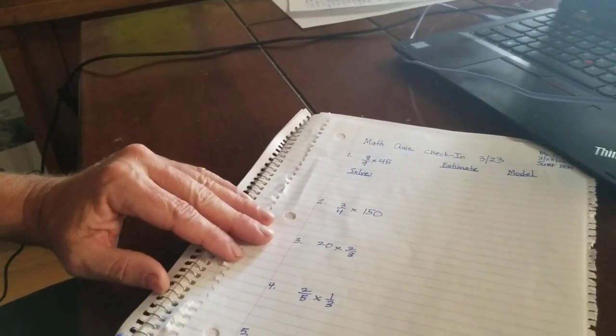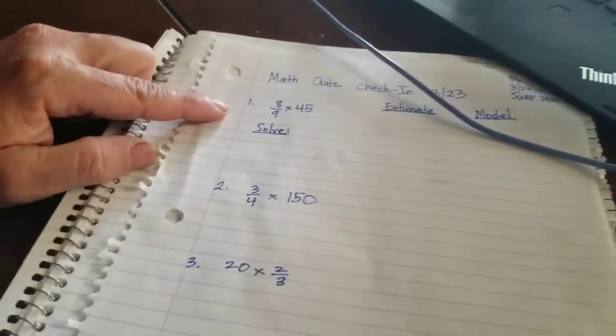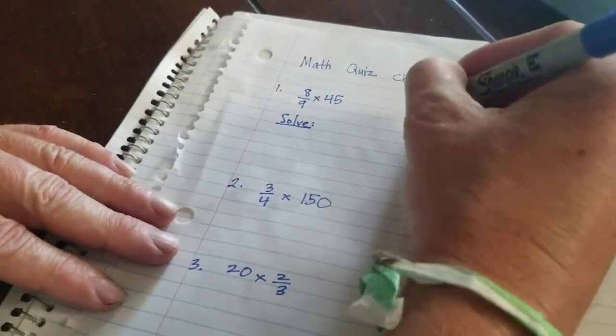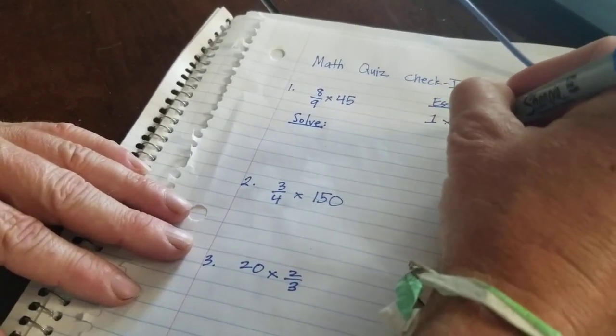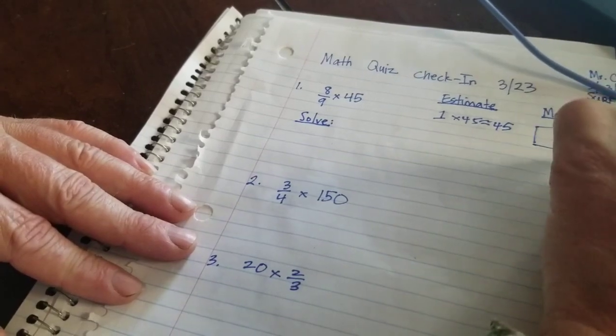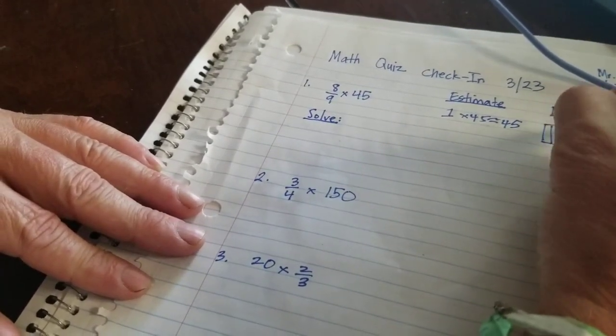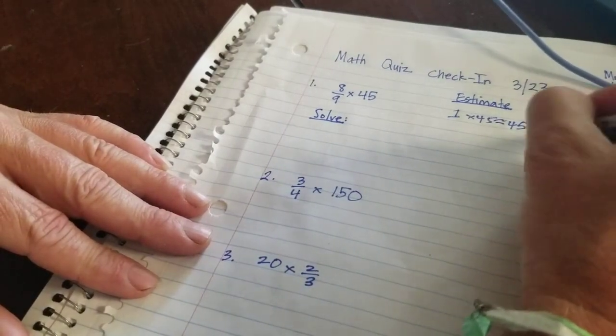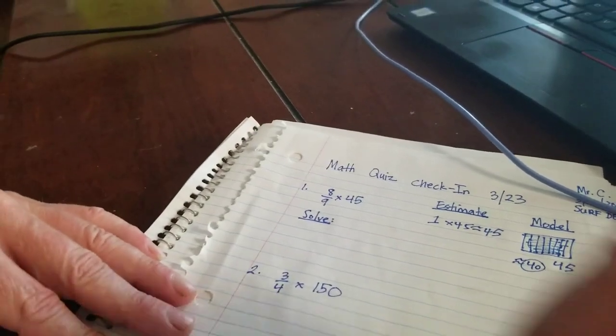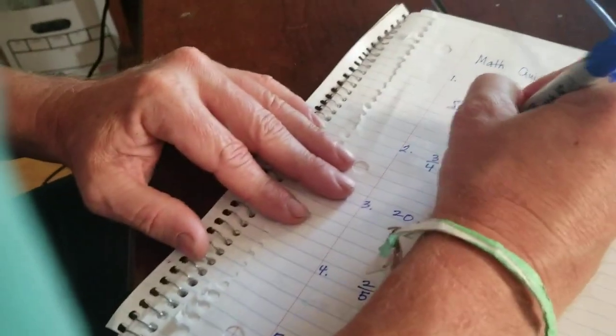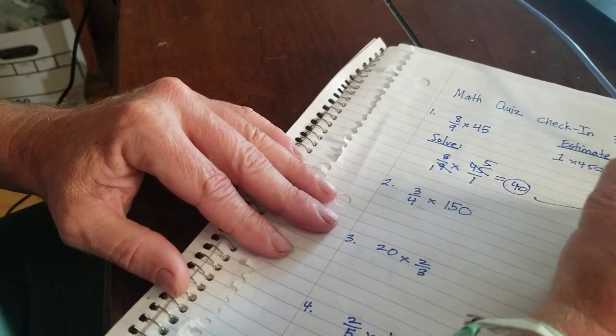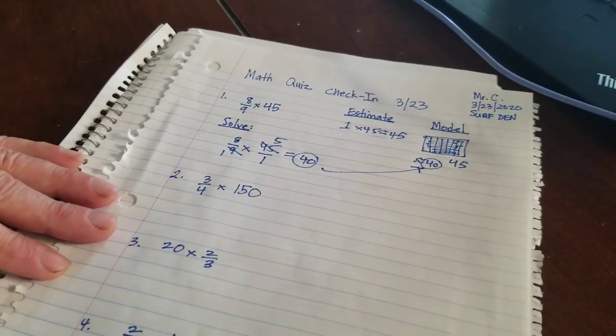Now that you've got them all, let's solve number one. First, I want to estimate. I'm going to estimate 8/9 to 1, and 45 stays 45 because it's compatible with 1. So my estimate is about 45. My model shows I have about 45 cookies split into ninths, and I give you about 8/9 of them, so I estimate about 40. Let's solve it: 8/9 times 45/1. I can cross cancel, and I get 40, exactly like my estimate.